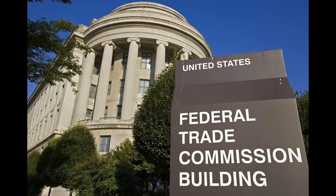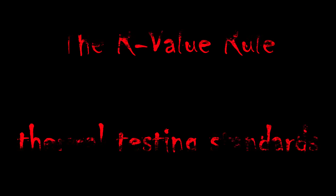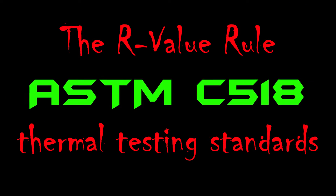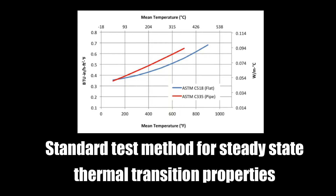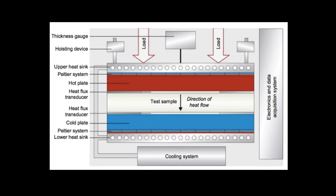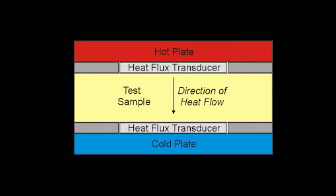The Federal Trade Commission, with the participation and support of the insulation industry, created an objective method for reporting the performance of residential insulation materials. This method is called the R-value rule. It mandates specific ASTM methods for thermal testing — specifically ASTM C518, the Standard Test Method for Steady-State Thermal Transmission Properties. This test uses a heat flow meter apparatus. The heat flow meter consists of a cold plate and a hot plate which incorporates heat flux transducers for measuring heat flow. The material to be measured is placed between the two plates.